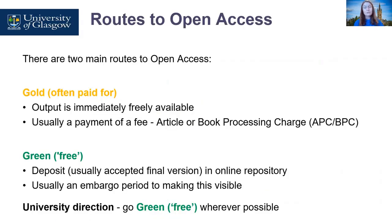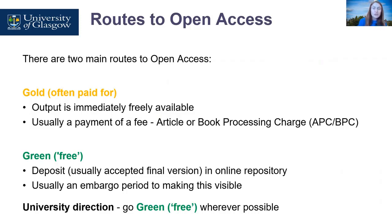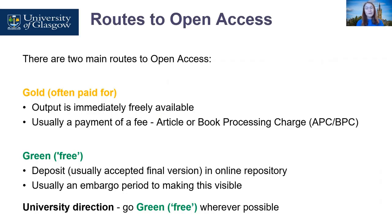There are a few different ways to achieve open access. If you're making something available yourself — like a dataset, a report, or grey literature — you can choose to license it yourself. But if you want something that's published to be open access, you need to be aware of the publisher's open access policy and check any correspondence and agreements that they send you.